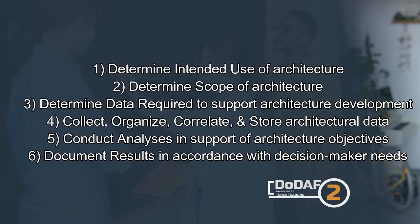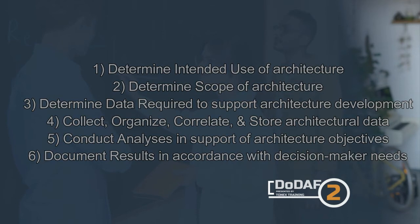The 6 steps are: determine intended use of architecture; determine scope of architecture; determine data required to support architecture development; collect, organize, correlate, and store architectural data; conduct analyses in support of architecture objectives; and document results in accordance with decision-maker needs.